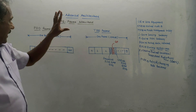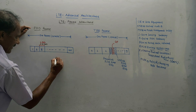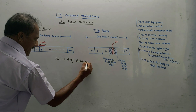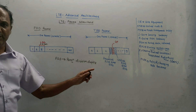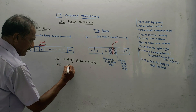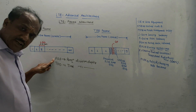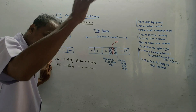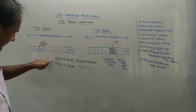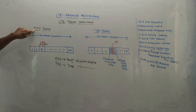The next part is the LTE frame structure. There are two types of frames: FDD and TDD. FDD stands for frequency division duplex — it is used for duplex, meaning two-way, communication. TDD stands for time division duplex. The major difference is that in FDD, two different frequencies are used for uplink and downlink, while in TDD, the same frequency is used for both but the time slots are different.